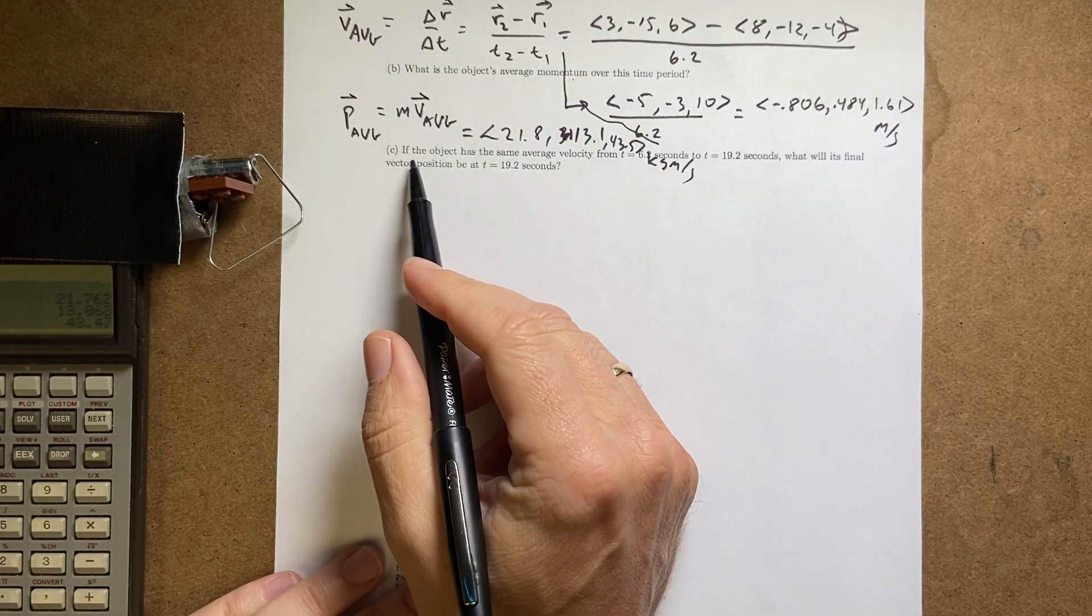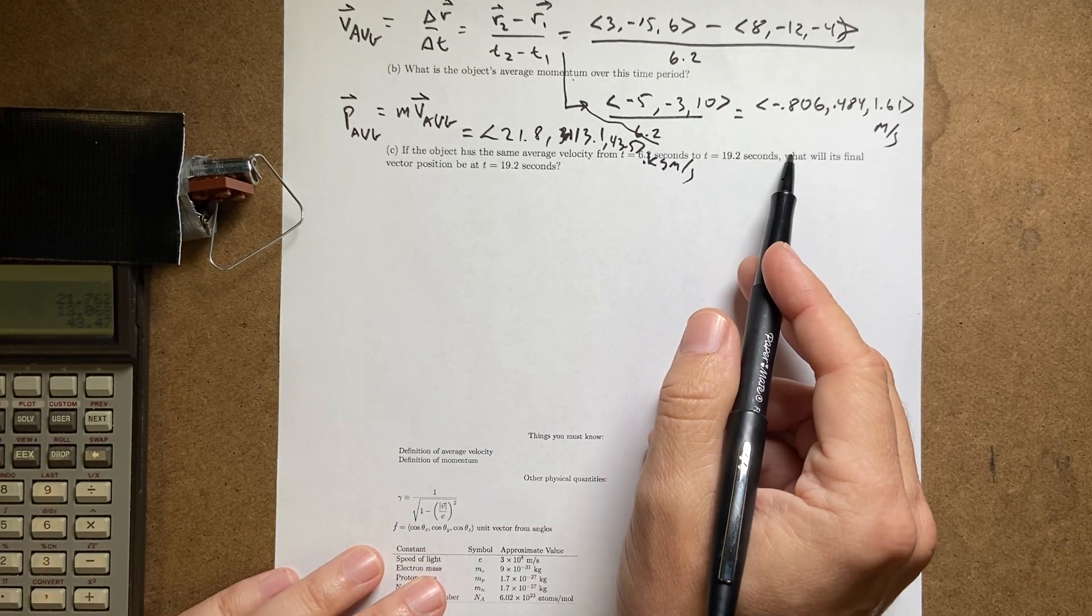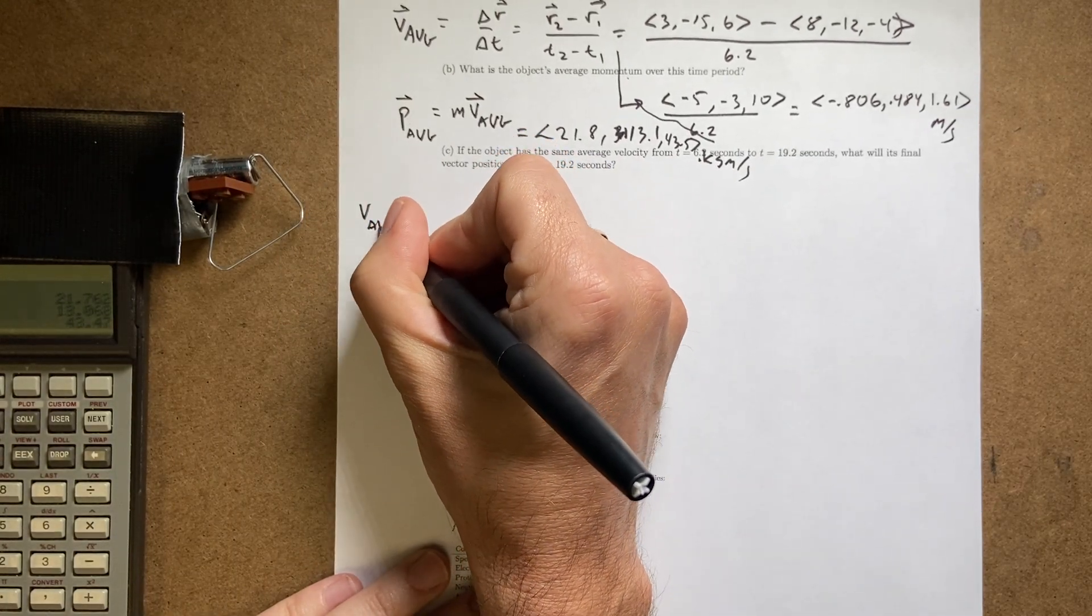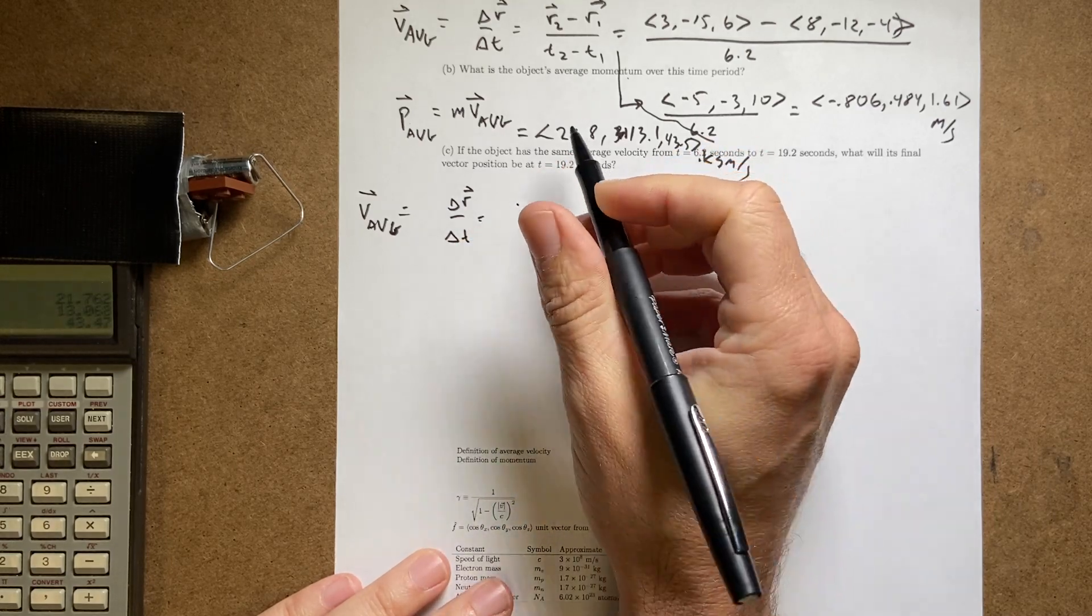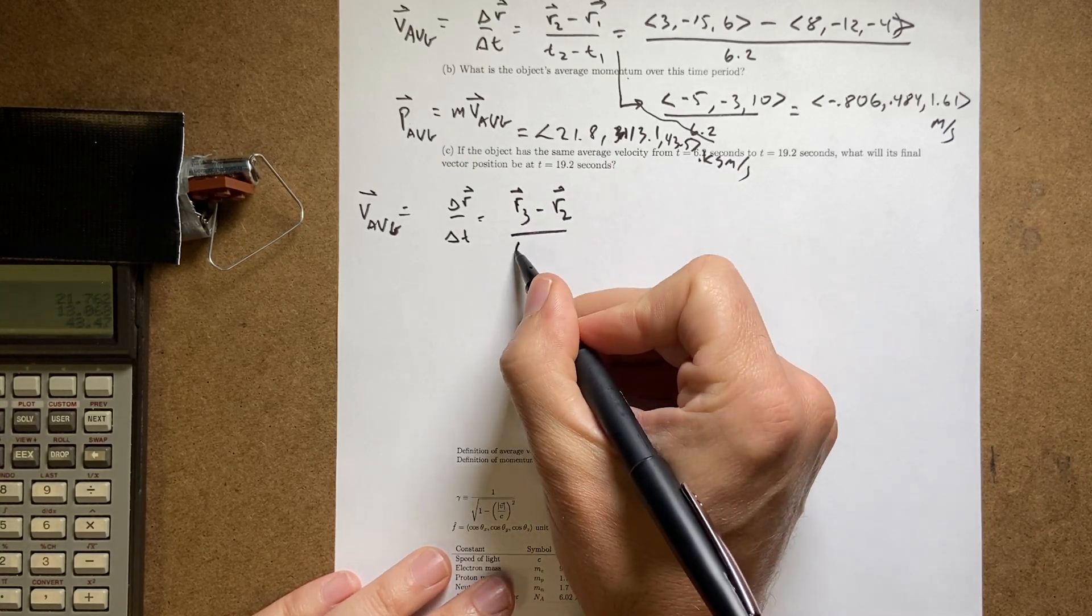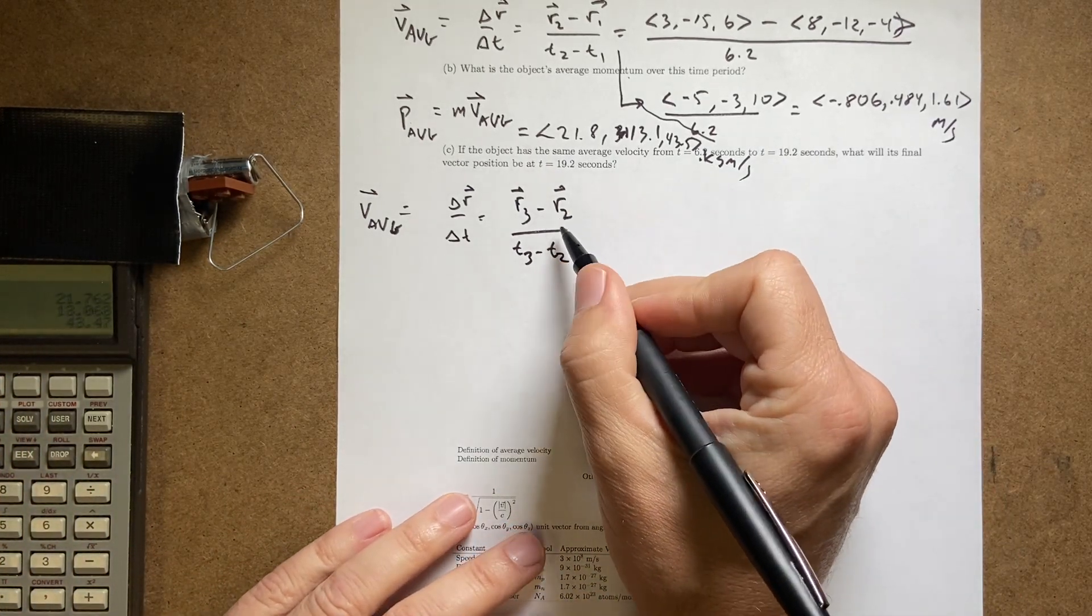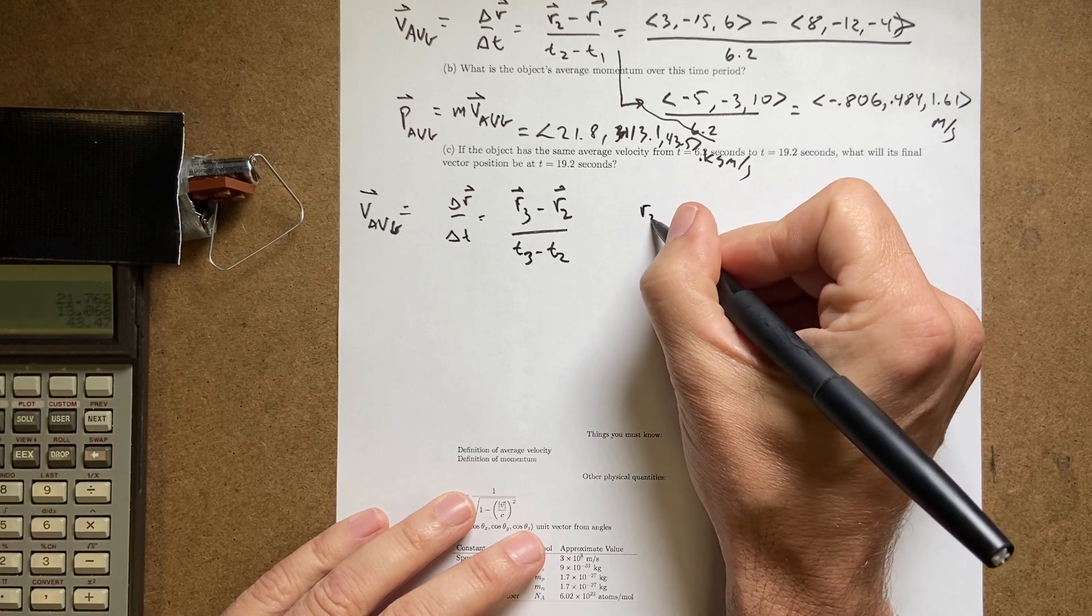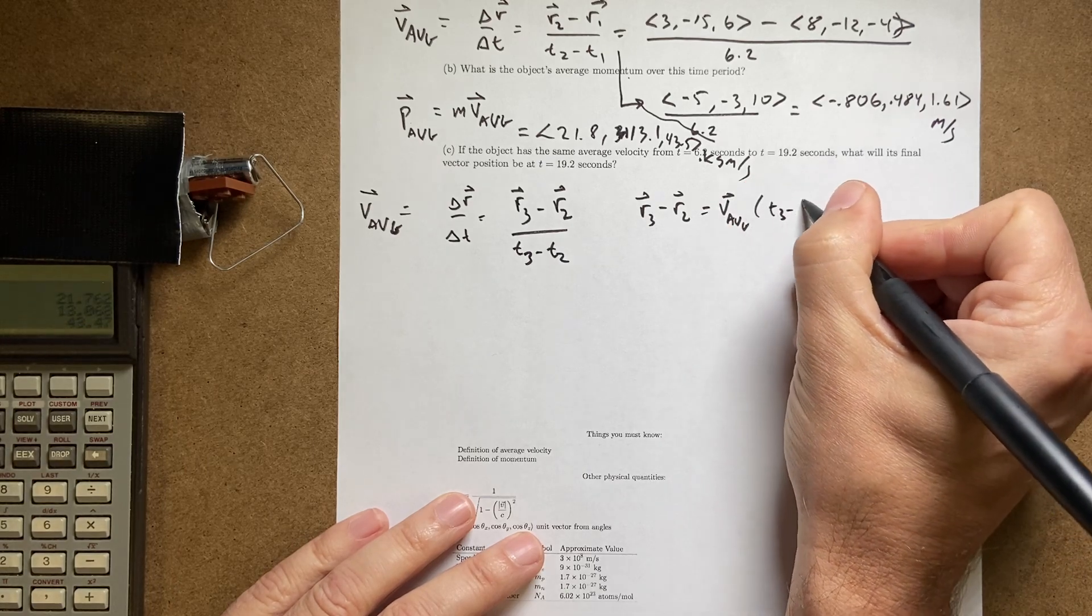Okay, finally, the last part says if an object has the same average velocity from 6.2 seconds to 19.2 seconds, what will be the final position. So here I'm going to start with this. V average is delta R over delta T. And that's going to be R3 minus R2 over T3 minus T2. Now, if I take this and I multiply both sides by T3 minus T2, I get R3 minus R2 equals V average times T3 minus T2.